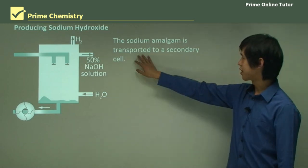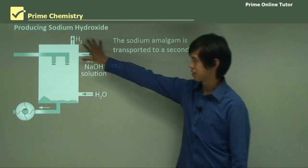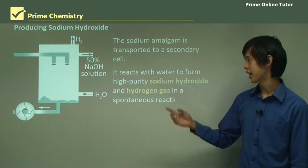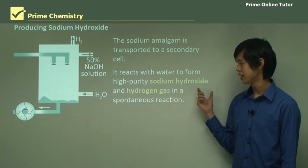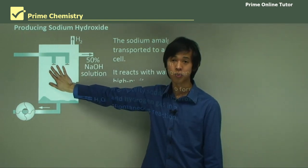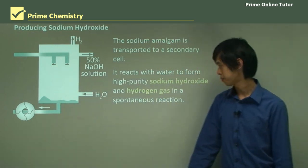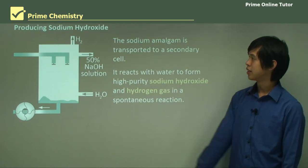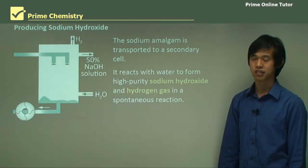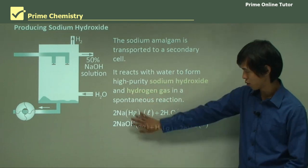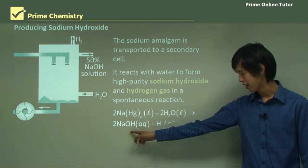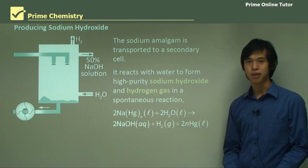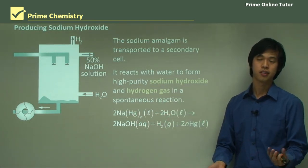The sodium amalgam is transported to a secondary cell. In this secondary cell, the sodium reacts with water to form high-purity sodium hydroxide and hydrogen gas. This cell is full of water, whereas the other one was full of sodium chloride solution. The sodium metal dissolves in the water in a very vigorous process, releasing H₂ gas and producing NaOH solution. The essential reaction is: sodium + water → NaOH + H₂ gas. The mercury doesn't react with the water — it just happens to be present in the process.